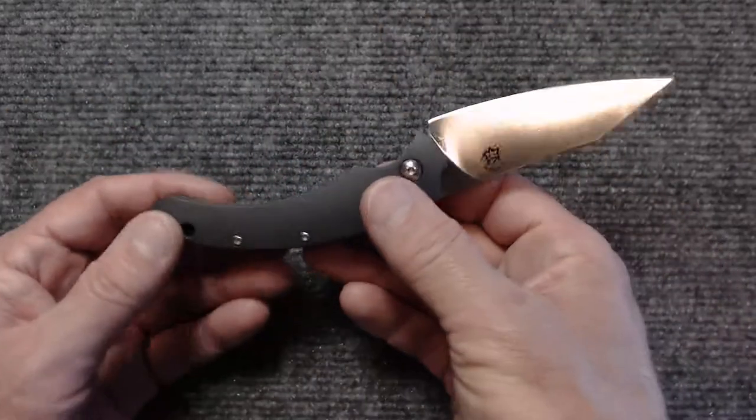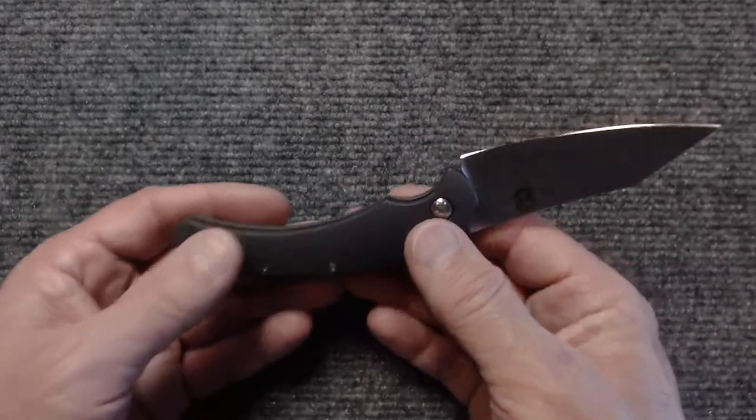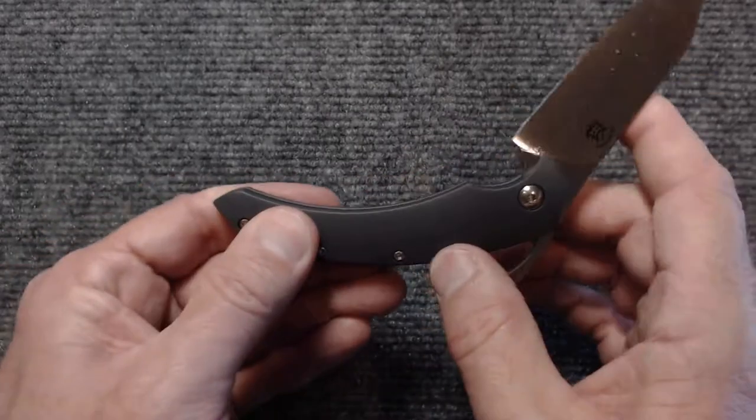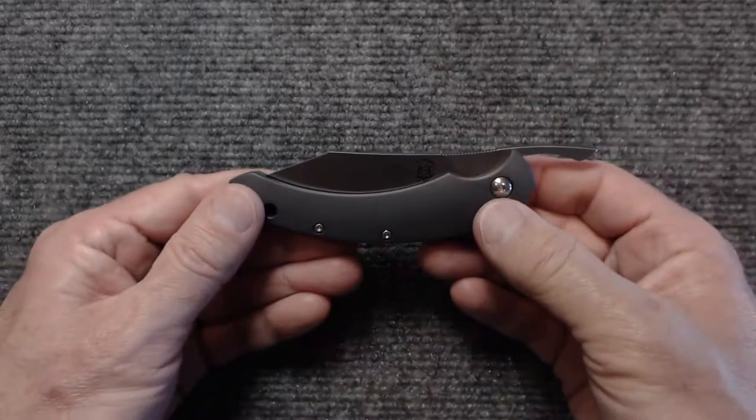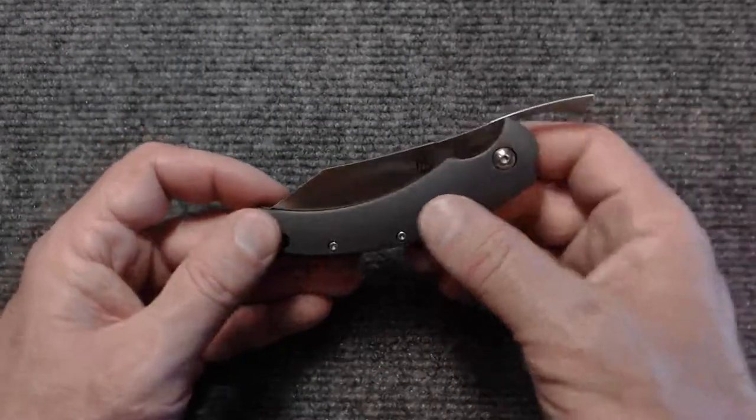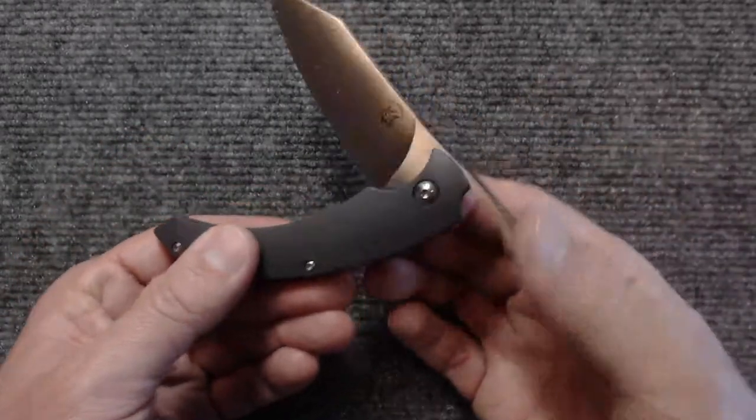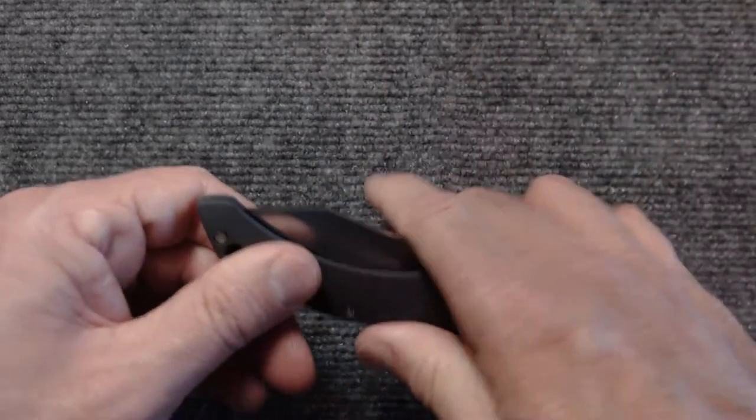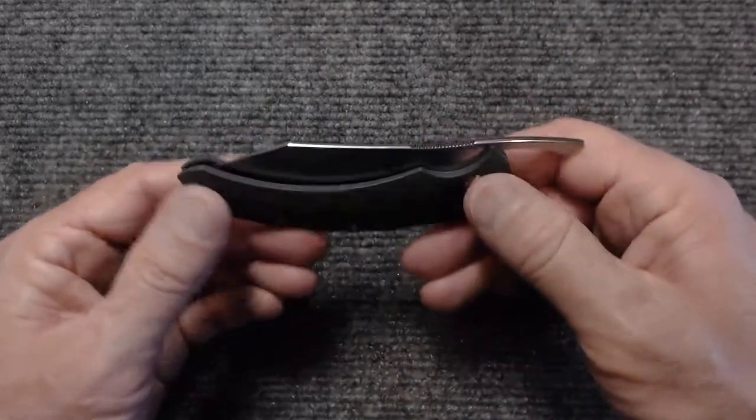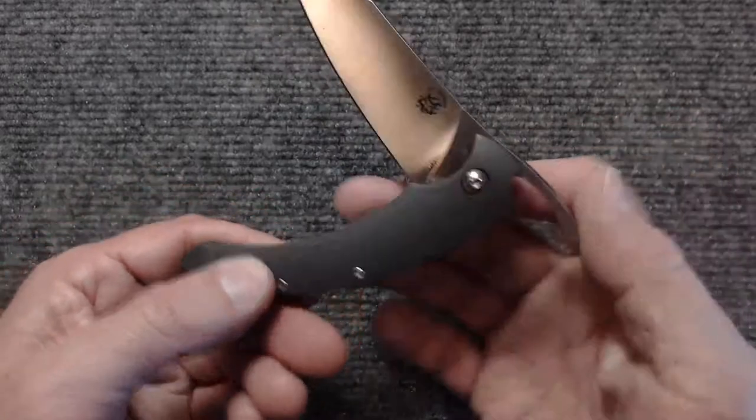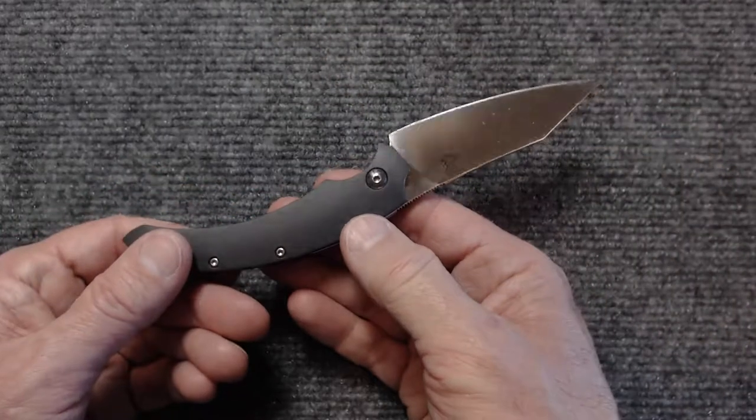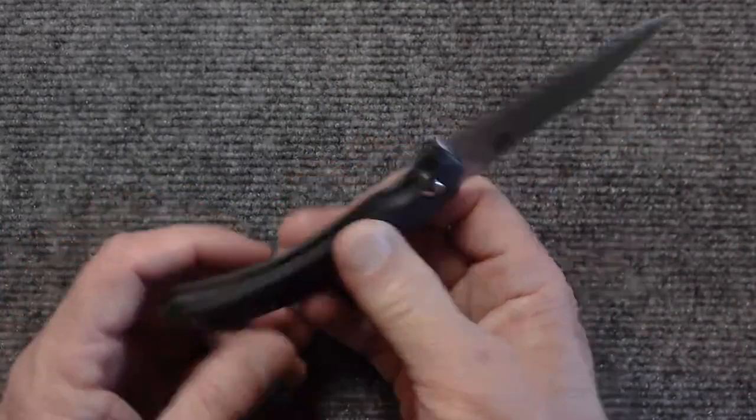So I guess why I'm talking about that so much is that this is a friction folder. So really what you got? You got two scales, the backspacers, some screws, and then some bushings, and then the blade. And so there's really not much to it. So what are you getting for your money? Well first of all the steel is decent. It's nothing fancy but it's decent.